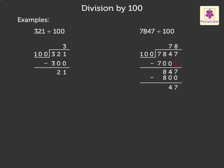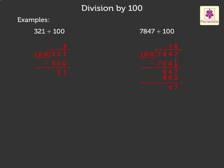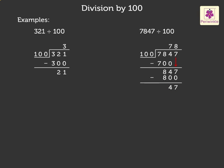Next is division by one hundred. Look at the board. We have solved two examples by division method. Look at the first example: three hundred twenty-one divided by one hundred. Here, we got the quotient as three and remainder as twenty-one.